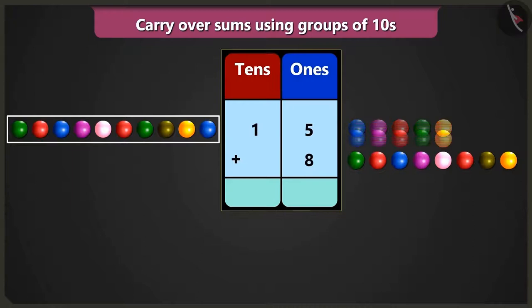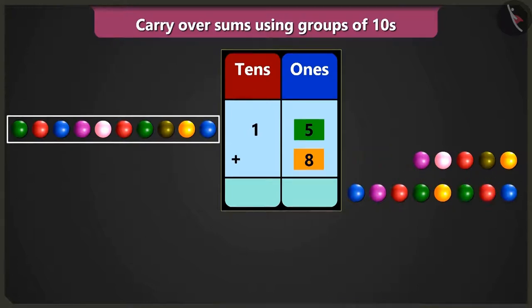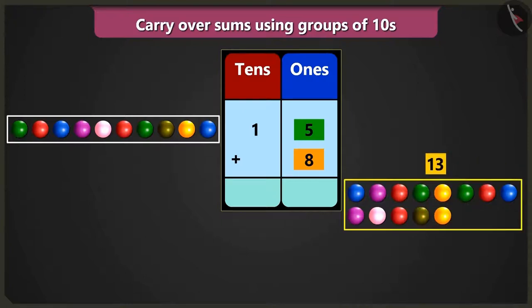Now, in the box of ones, when we add 5 ones and 8 ones, then, after 5: 6, 7, 8, 9, 10, 11, 12, and 13 marbles.